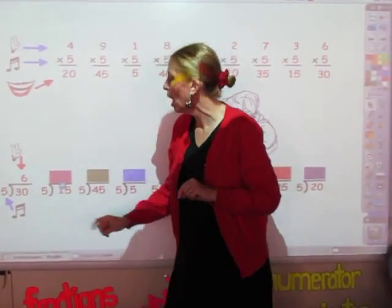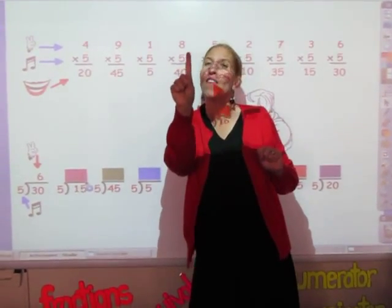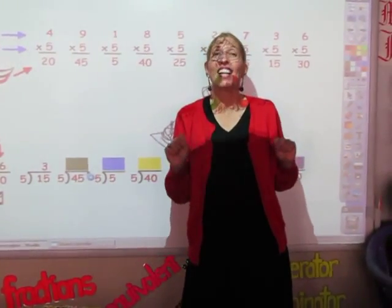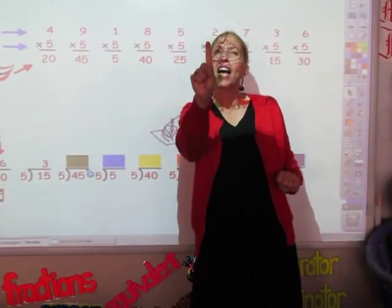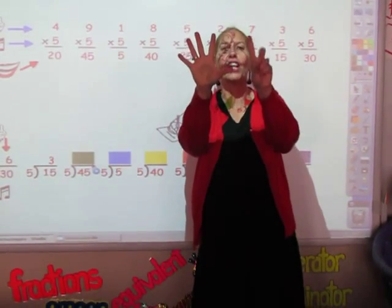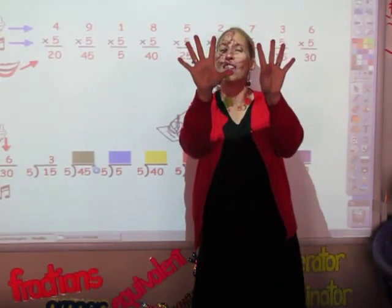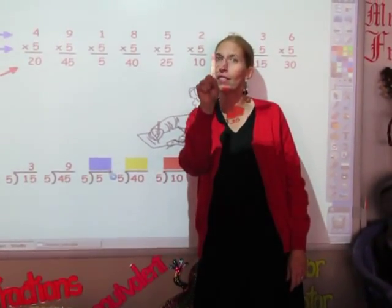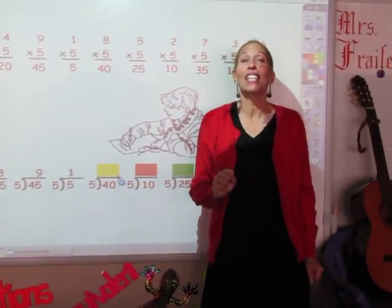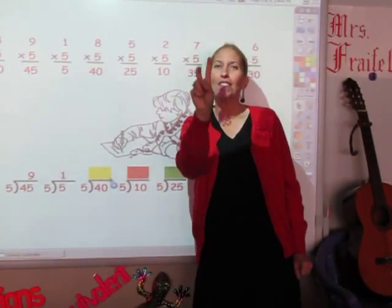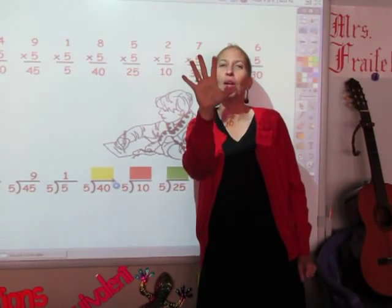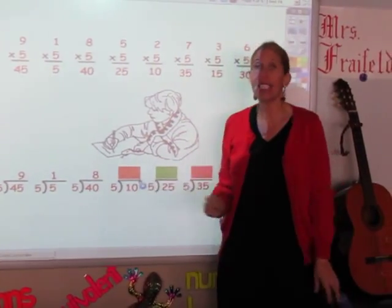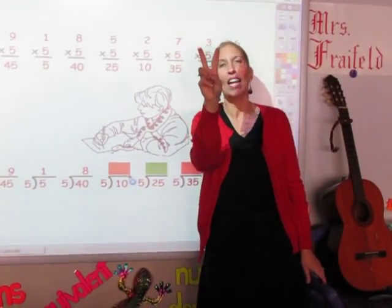I'm going to say my fives until I get to 15: 5, 10, 15. Three is my answer. I'm going to say my fives until I get to 45: 5, 10, 15, 20, 25, 30, 35, 40, 45. Nine is my answer. I'm going to say my fives until I get to 5: Five. One is my answer. I'm going to say my fives until I get to 40: 5, 10, 15, 20, 25, 30, 35, 40. Eight is my answer. I'm going to say my fives until I get to 10: 5, 10. My answer is two.